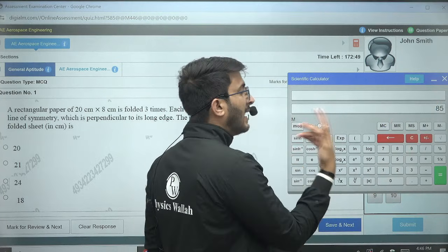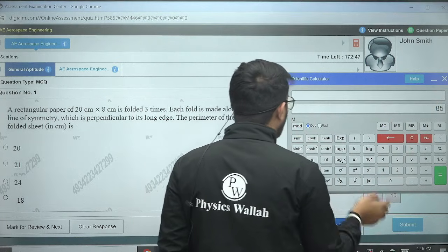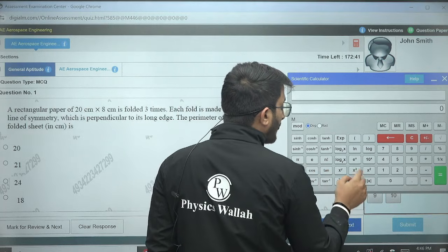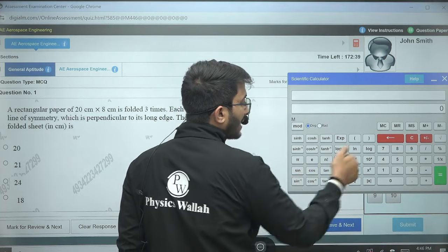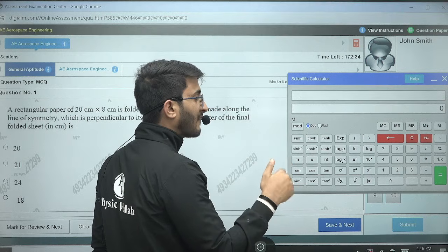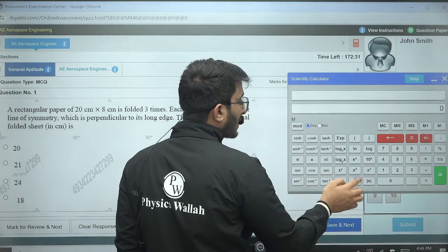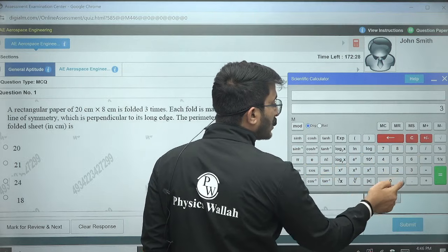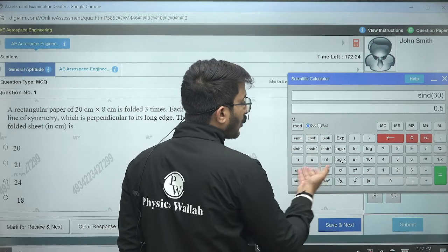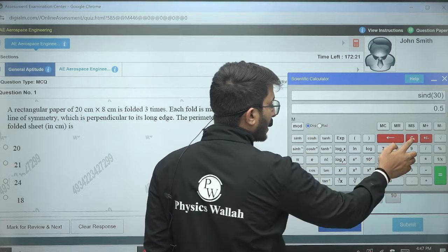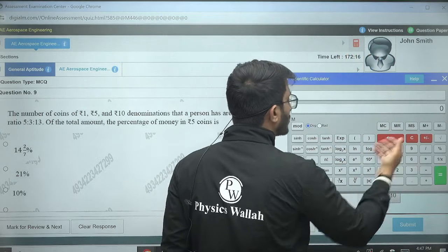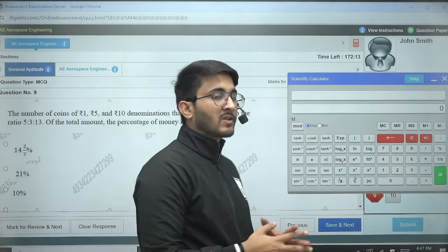Similarly guys, a normal calculator, whenever we need to use, then first we need to put the sign and then the value. But in a virtual calculator, the things function differently. For example, if you need to calculate sin 30, then first you need to press the 30 and then you need to press the symbol of sin. Similarly happens in all the terms you can observe here. Similarly, if you want to calculate for e terms, log terms, you also need to use in a similar way.